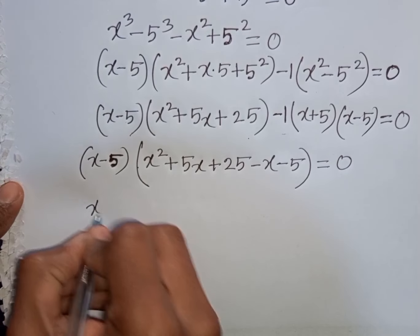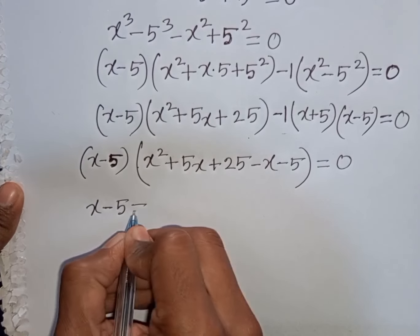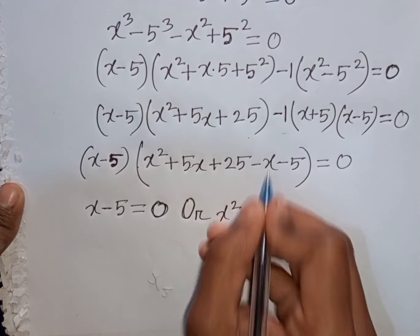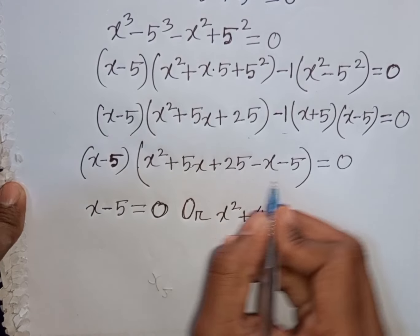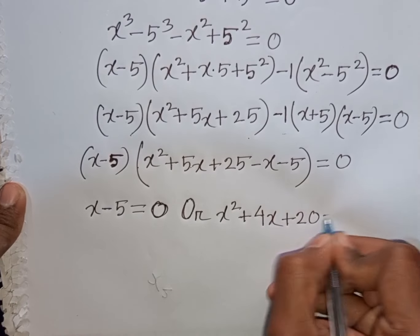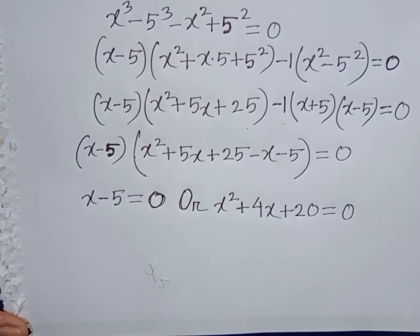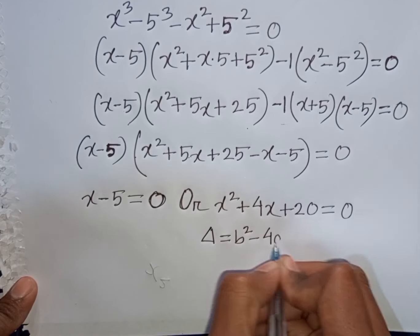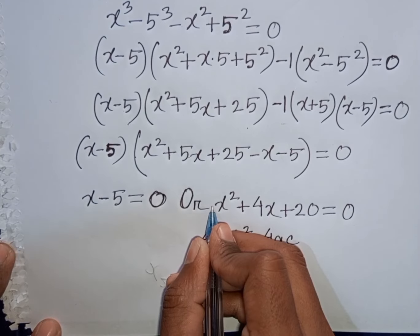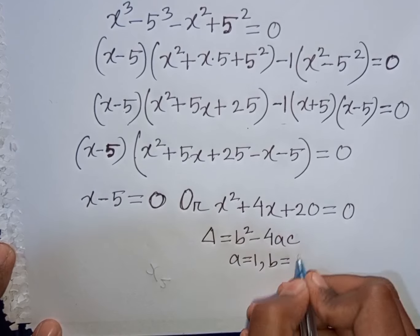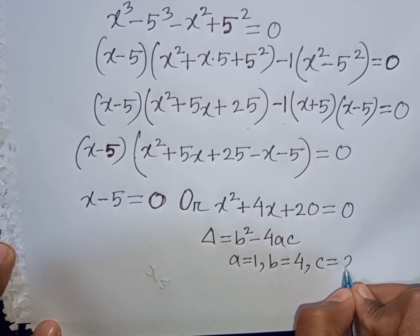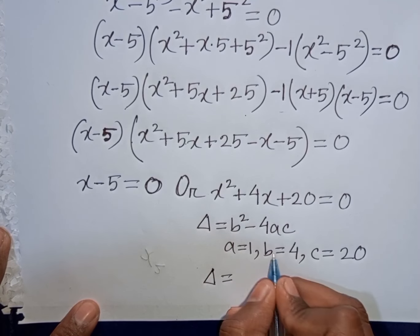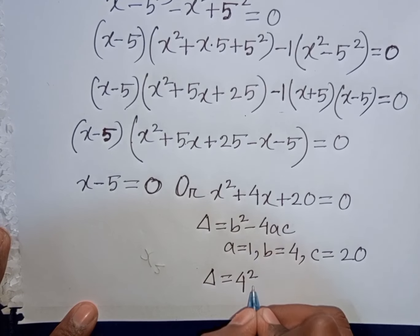Now we can write: x - 5 = 0, or x² + 5x - x + 25 - 5 = 0, that means x² + 4x + 20 = 0. Here you can apply the discriminant formula: delta = b² - 4ac, where a = 1, b = 4, c = 20.